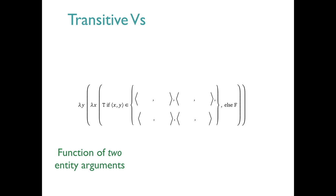Transitive verbs are a different sort of beast. Here's the framework for them. These are functions of two entity arguments. Once again, once the arguments are in, we return a T or F based on set membership. But now it's membership of a pair of entities in a set of pairs of entities.